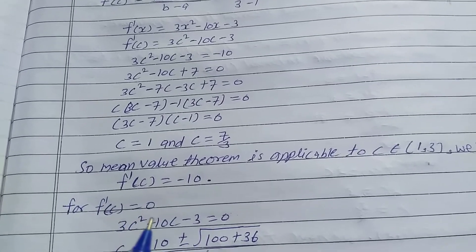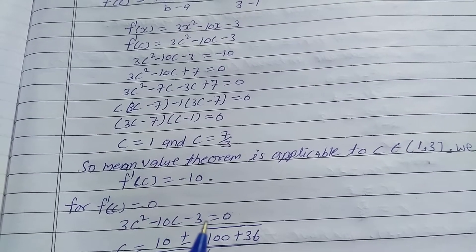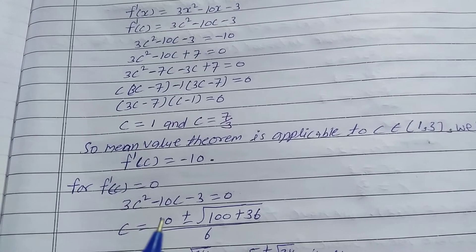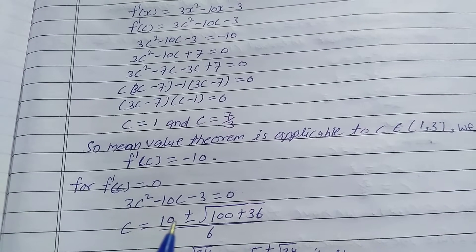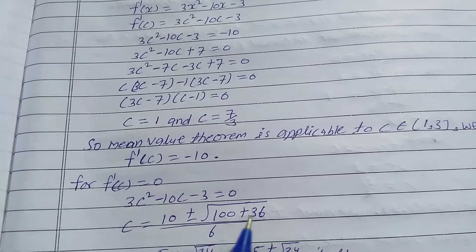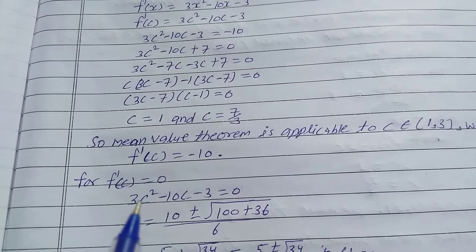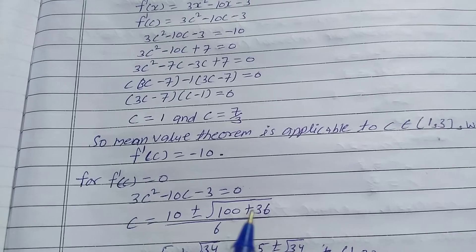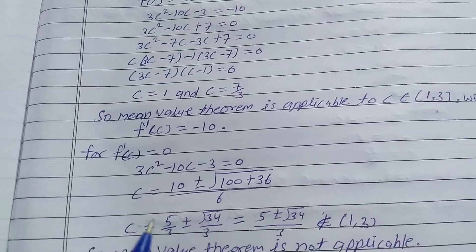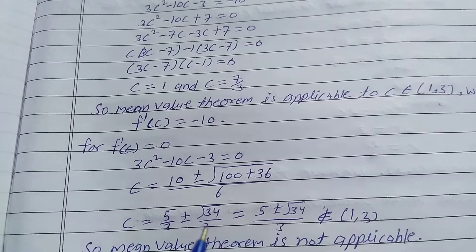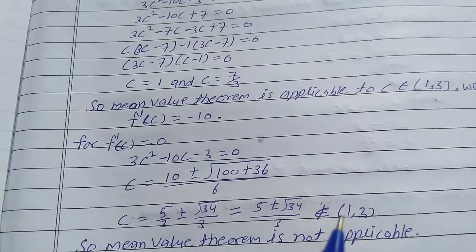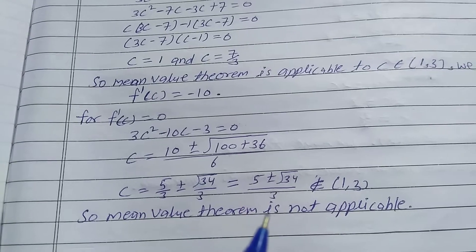For f'(c) = 0: the function 3c² - 10c - 3 = 0. Using the quadratic formula: c = [10 ± √(10² - 4·3·(-3))] / (2·3) = [10 ± √136] / 6 = 5/3 ± √34/3. These values do not belong to the open interval (1, 3), so the Mean Value Theorem is not applicable for f'(c) = 0.